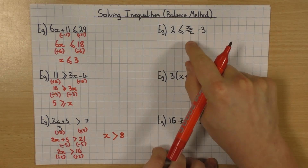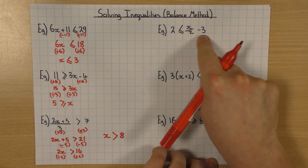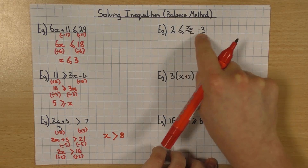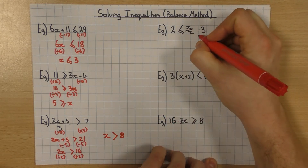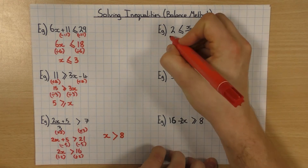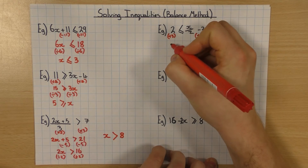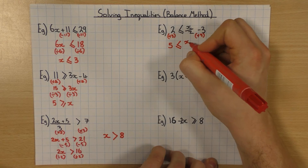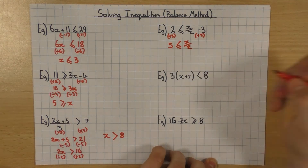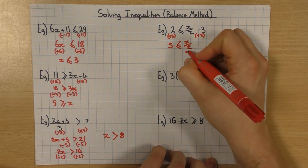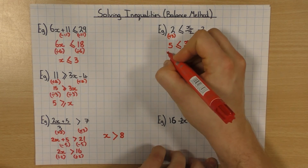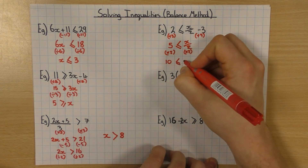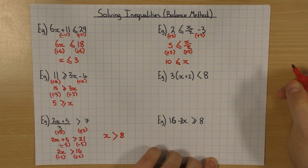Next one here is slightly different. This time I'm not dividing everything by 2 — it's just the x that's being divided by 2. So I'm going to leave that for now and get rid of this minus 3 first. To do that I do the opposite and add 3, so I'll have 5 on that side, the inequality sign stays the same, and then I've still got x divided by 2. Now I can get rid of that divide by 2 by doing the opposite and multiplying by 2. 5 times 2 is 10, inequality sign stays the same, and obviously I'm left with x.